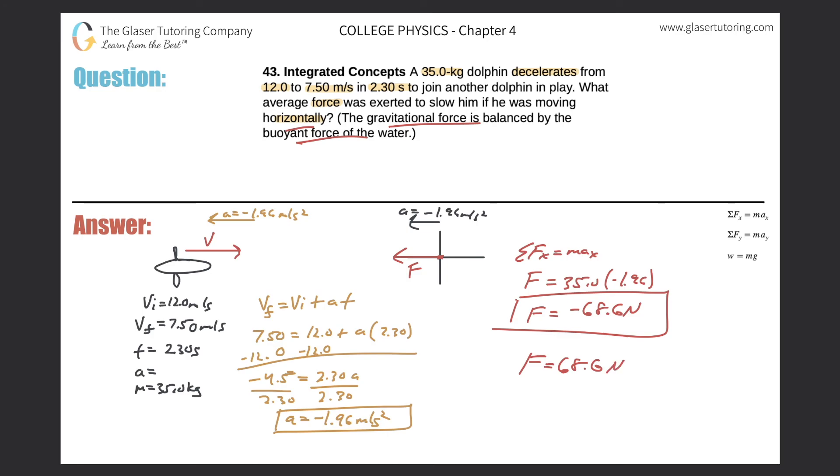You could just give the magnitude of it because it doesn't say what direction, and it kind of depends. If I chose the dolphin to be moving to the left, then my answer would have come out to be positive. So that's probably good enough—just give the absolute value. Thanks for tuning in, I really hope this helped. Please do remember to subscribe, that would be awesome. I hope to see you next time. Take care.